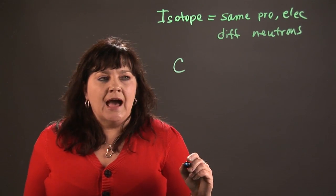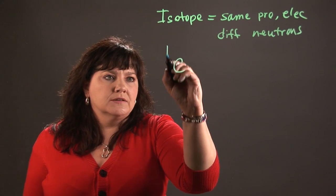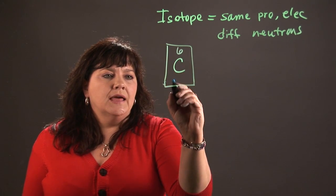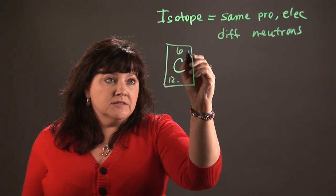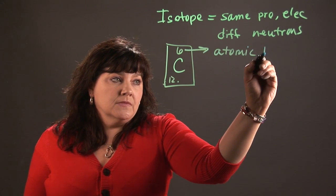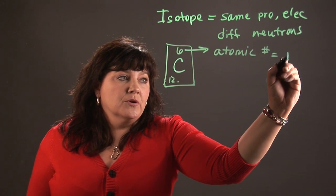Carbon is typically going to have two numbers. You're going to see it in a box, and there's usually a whole number on the top and a number that might have decimal places on the bottom. Now this number on the top is what we call the atomic number, and that equals the number of protons.